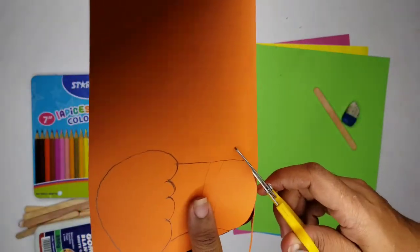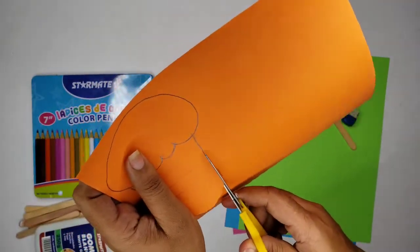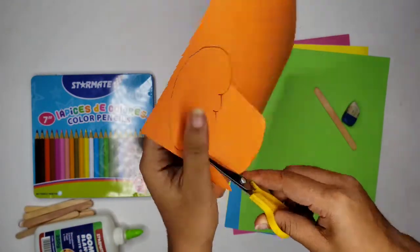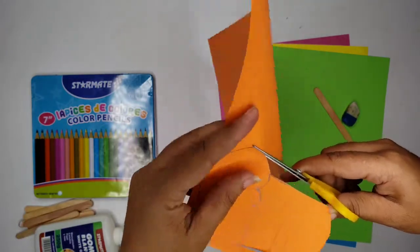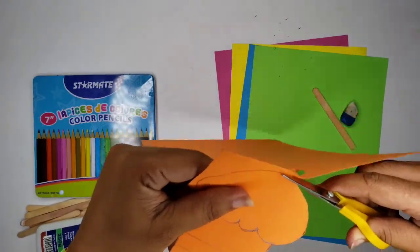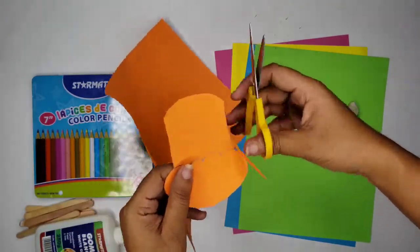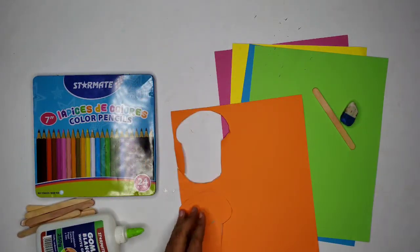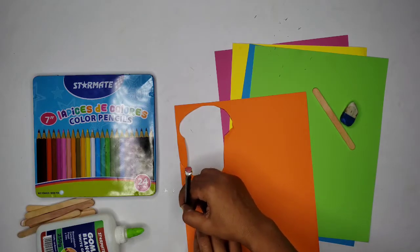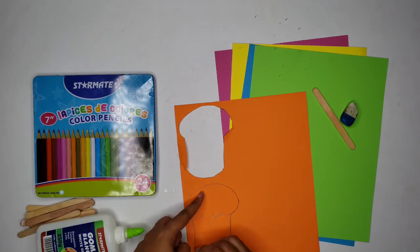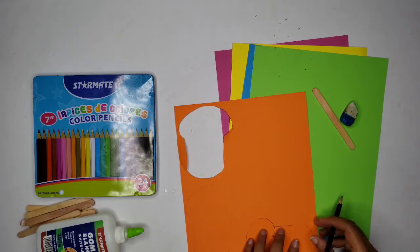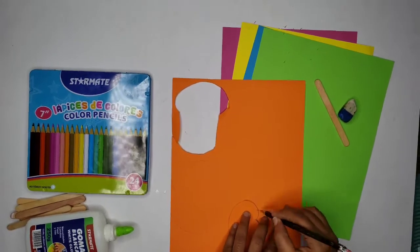We're just going to cut out this stencil so we can use it to draw on the other paper so everything is the same size. You know the drill—we're just going to fit as many as we could on that page.